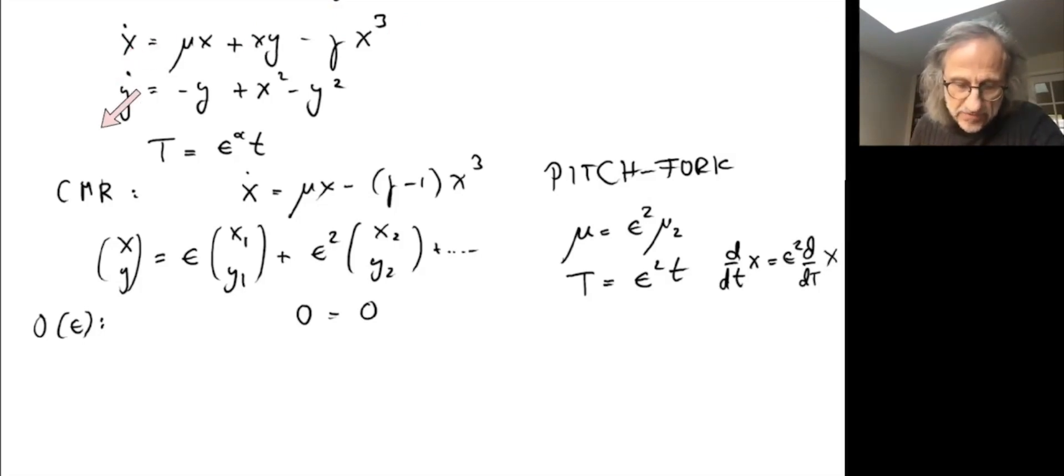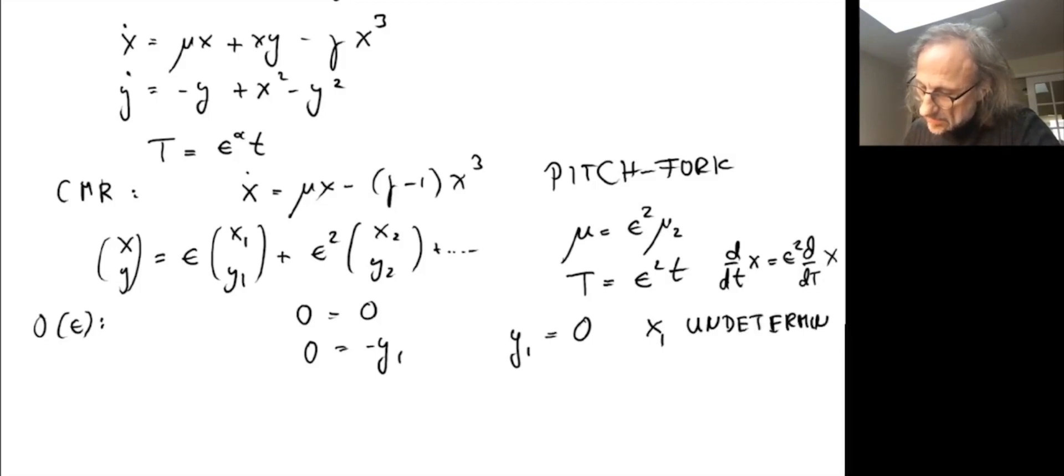For the y equation, again this is order ε³, but this is order ε. We get zero equals -y₁, and the other terms are ε². So the first conclusion is that y₁ = 0, and x₁ is actually still undetermined. That's a characteristic feature of this kind of approach. This is just a linear problem, and the amplitude is arbitrary in a linear problem.